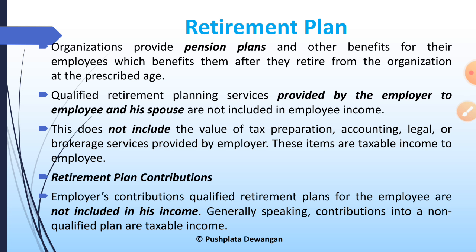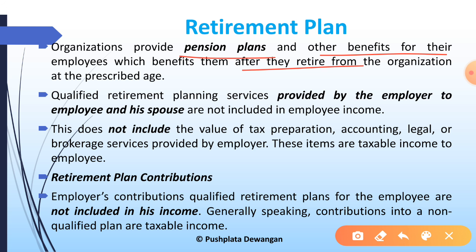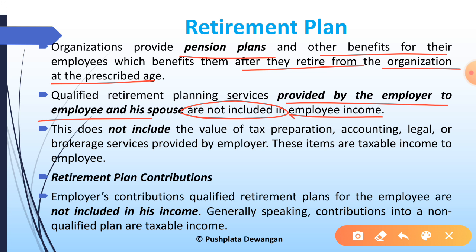The next topic is the retirement plan. Organizations provide pension plans and other benefits for their employees which benefit them after they retire from the organization at the prescribed age. Qualified retirement planning services provided by the employer to the employee and spouse are not included in the employee's income. This does not include the value of tax preparation, accounting, legal, and brokerage services provided by the employer, as these items are taxable income to employees.